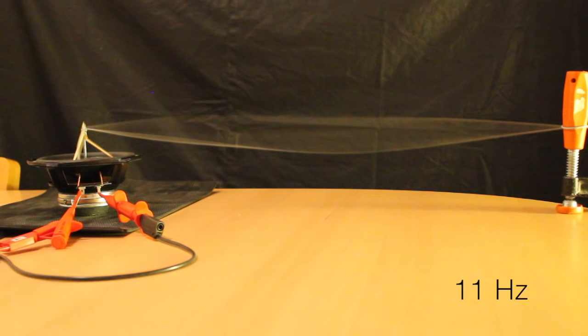So you can see now, we'll freeze this, the string is in what's called its first mode of vibration. This is the frequency, 11 Hz for this particular string and this particular setup, this is the frequency it wants to resonate at, the lowest one, this 11 Hz, so 11 times per second.